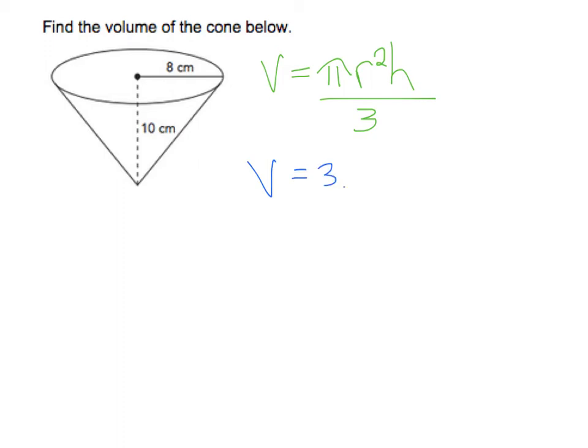So this becomes 3.14 times the radius squared. So 8 squared is 64 times the height of this cone, which is 10. And we'll divide it by 3.